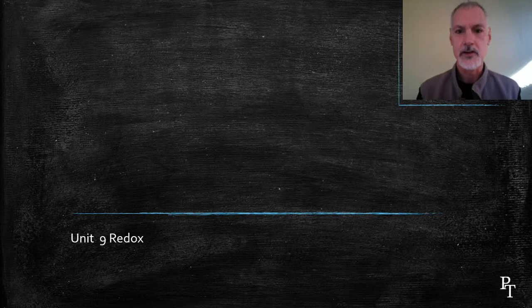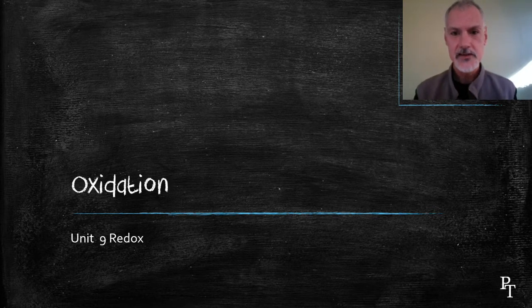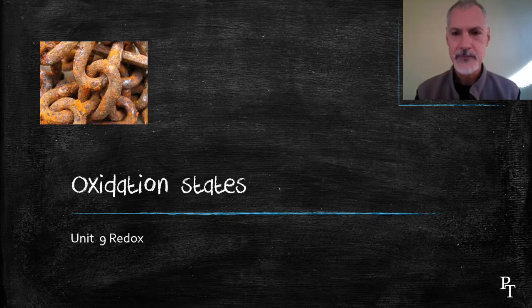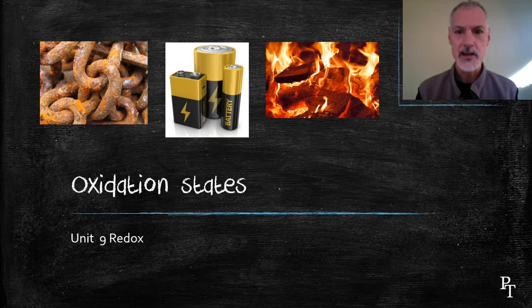Welcome. Today we're going to take a look at something called oxidation states. Let's start by looking at these three images. What do they all have in common, whether it be rusting of iron, the operation of a battery, or a fire?